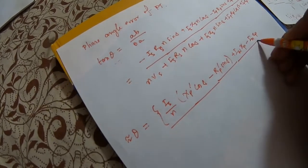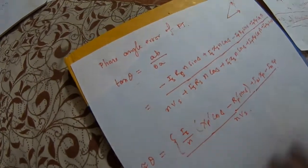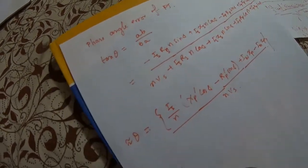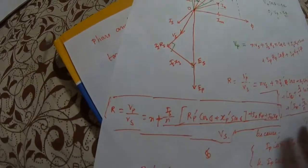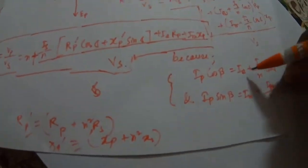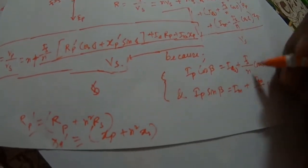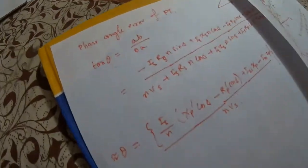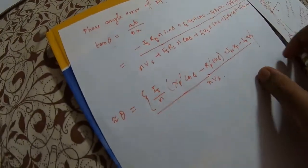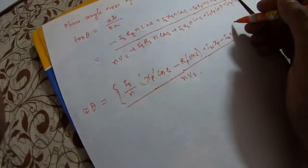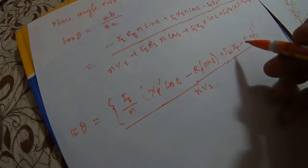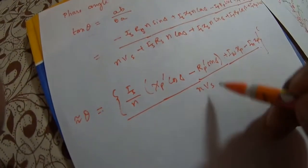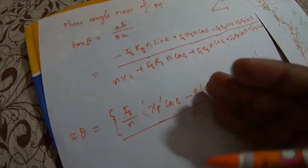In this case, similar to the previous class, we take Ip cos β = Iw ≈ (Is/n) cos δ, and Ip sin β + Im = (Is/n) sin δ, and substitute these factors. This result is in radians — to convert to degrees, multiply by 180/π. This is the value of the phase angle error of a potential transformer, and it is a continuation from the previous class.